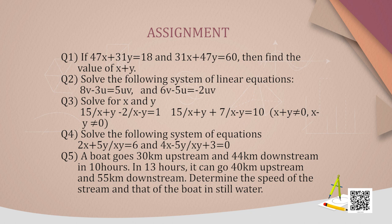Question 3: Solve for x and y — 15 upon (x plus y) minus 2 upon (x minus y) equals 1, and 15 upon (x plus y) plus 7 upon (x minus y) equals 10, where x plus y is not equal to 0 and x minus y is not equal to 0.